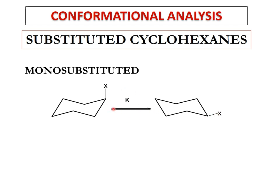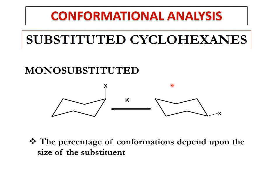K represents the equilibrium constant between flipping of these rings. In a normally unsubstituted cyclohexane, ring flipping is very fast at room temperature, and at room temperature you cannot differentiate between the axial or equatorial hydrogens. But at lower temperatures you can differentiate through NMR between axial and equatorial hydrogens. In substituted cyclohexanes, the percentage of these two conformations depends upon the size of the substituent X.